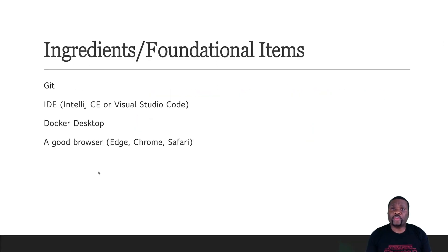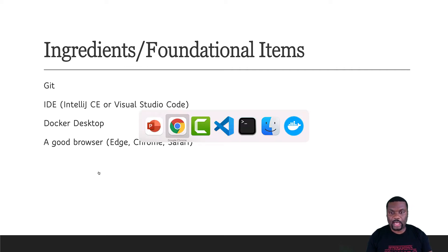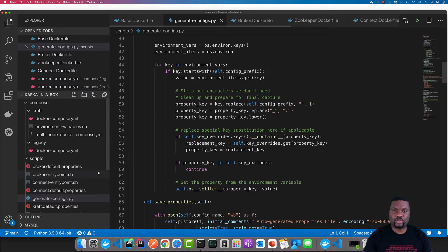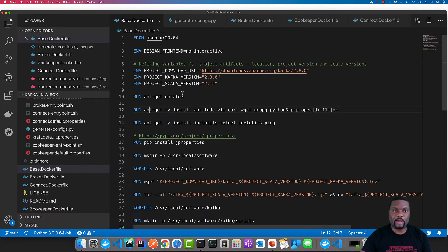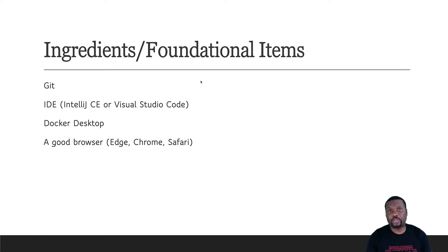What you need for this particular tutorial is Git available in your command line interface, an IDE like IntelliJ or Visual Studio Code — I'm using Visual Studio Code with the code samples for this — Docker Desktop up and running, and a browser in case you want to check out the documentation and some of the items I have in the repository.